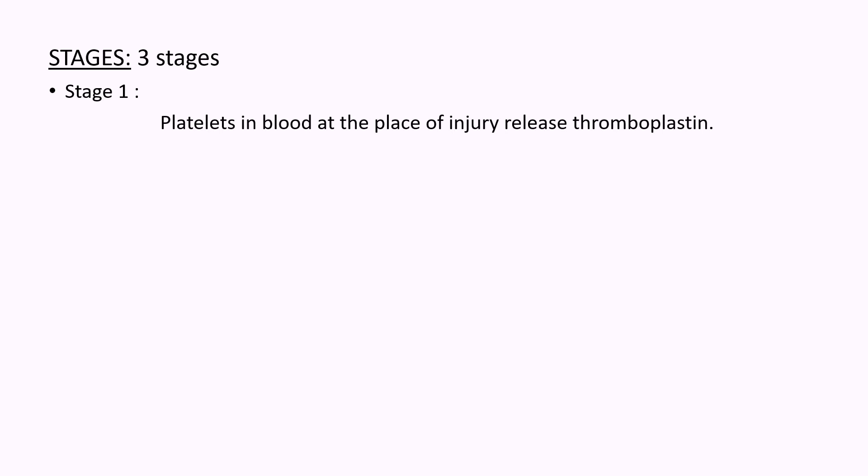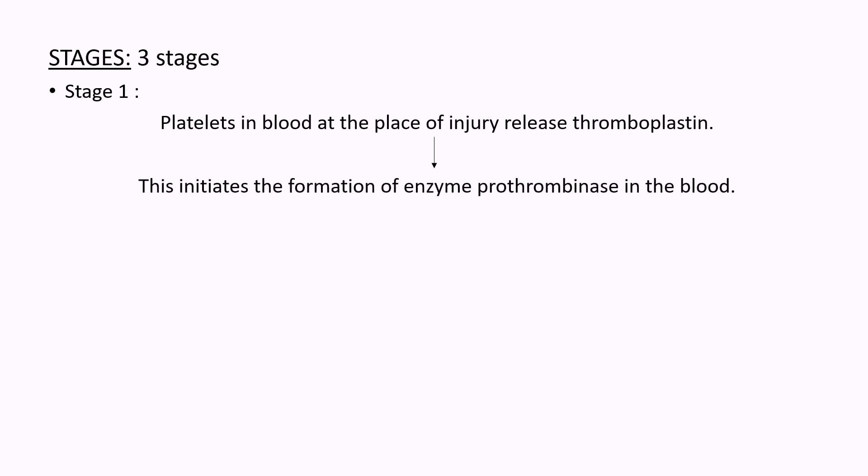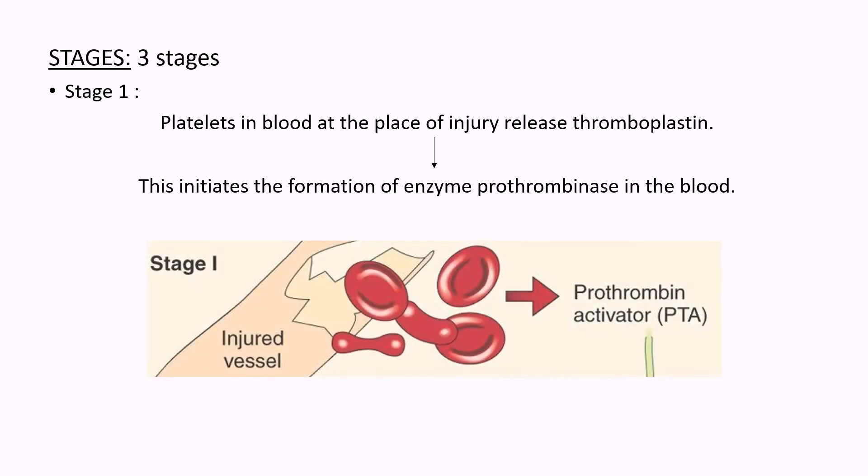Now let's see the stages of blood clotting. It basically involves three stages. In the first stage, the platelets in blood release thromboplastin at the site of injury. This initiates the formation of enzyme prothrombinus in the blood.